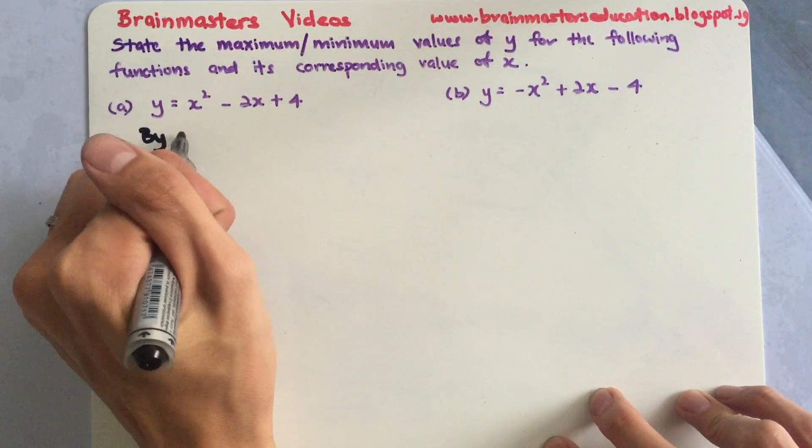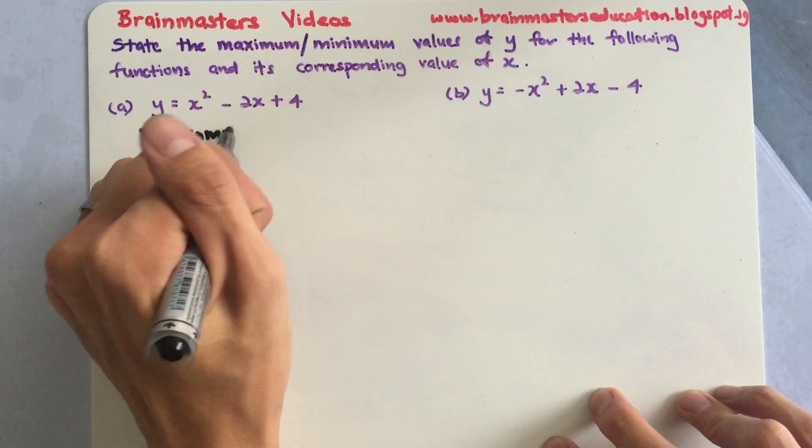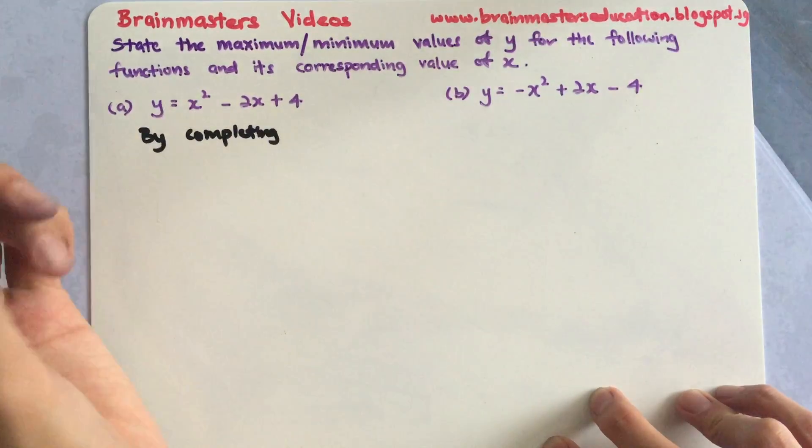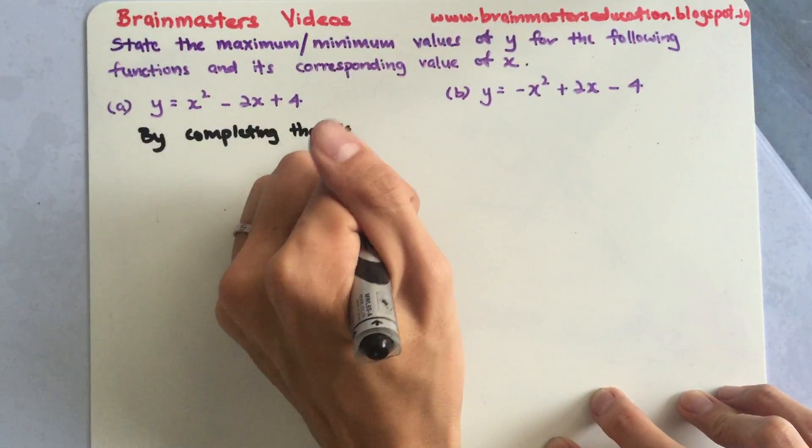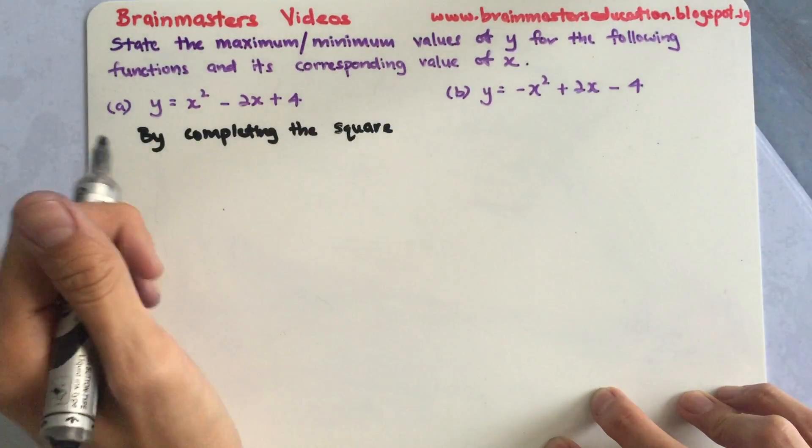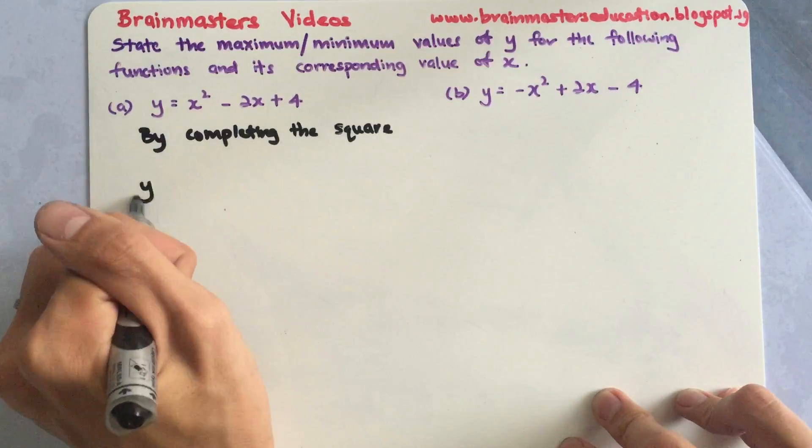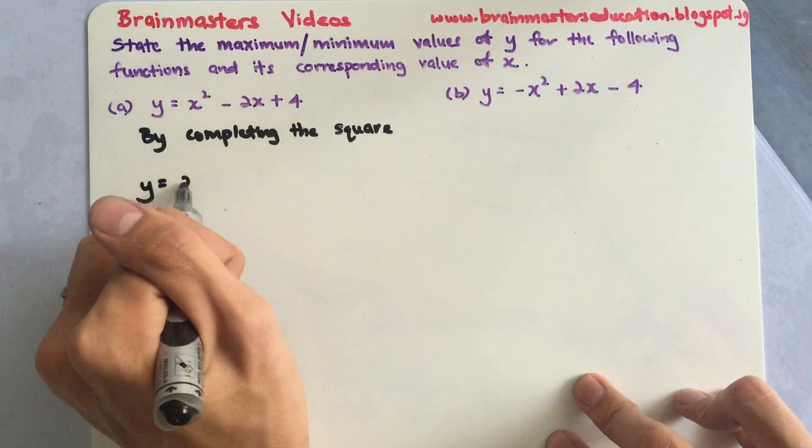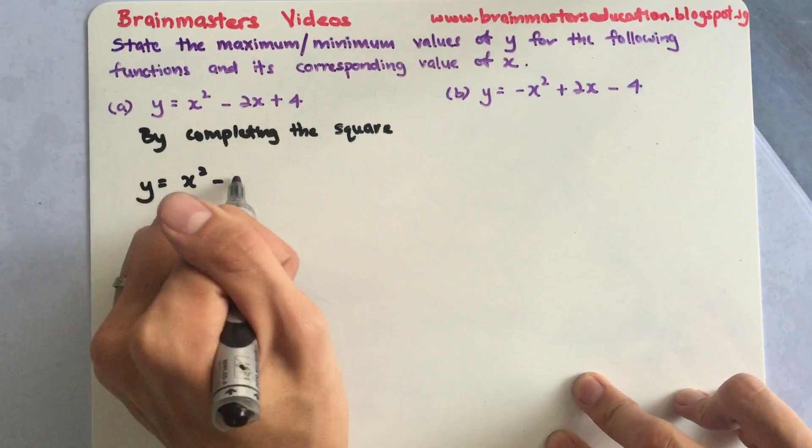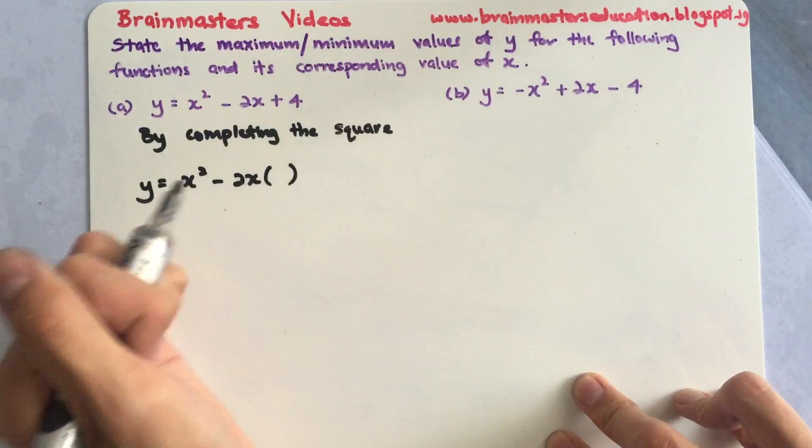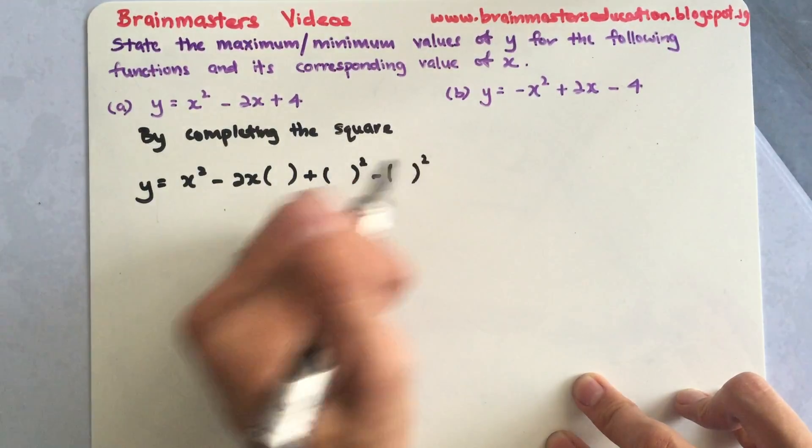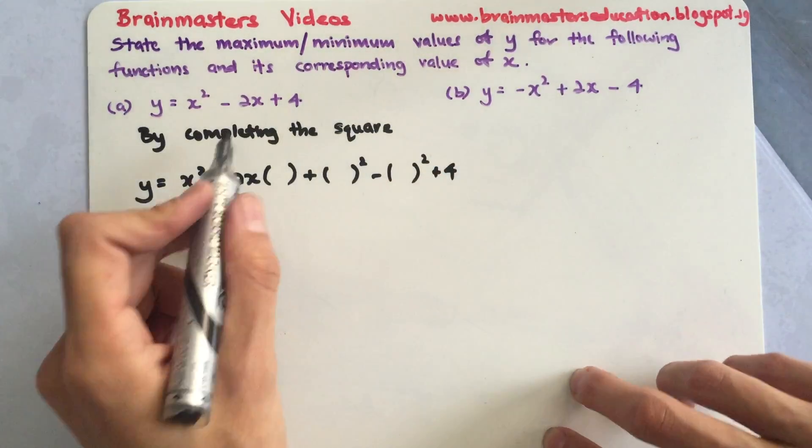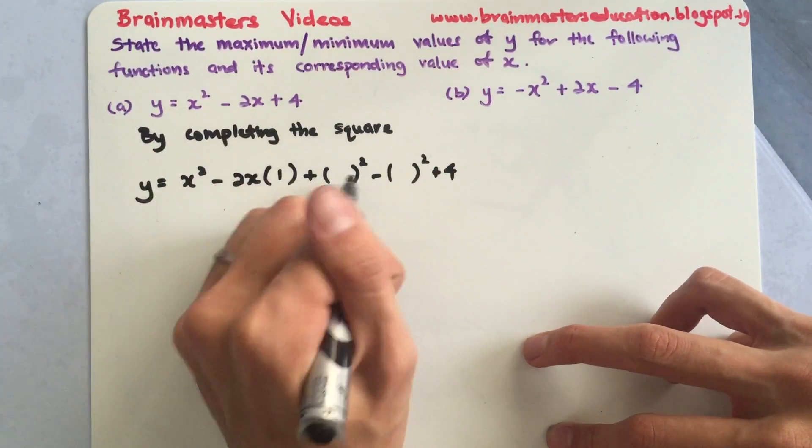By completing the square, I have a skeleton usually. So y equals x² minus 2x plus something squared minus something squared plus 4. The number here will be 1.